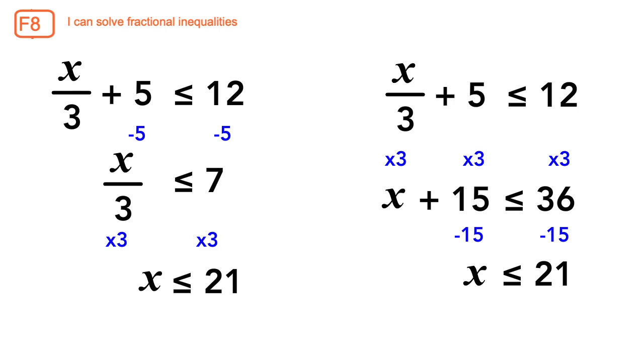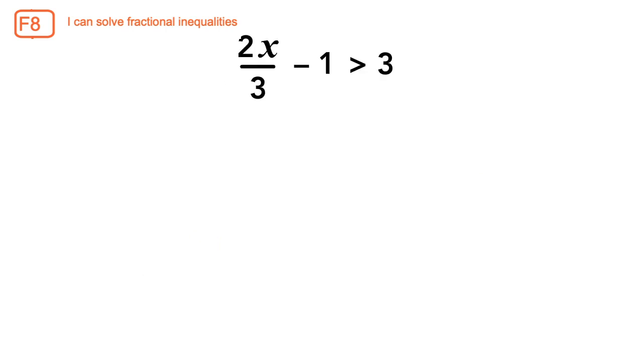To avoid confusion, the first process is how we will proceed going forward. Let's try with this question. We will add 1 to both sides, which gives us 2x over 3 which is greater than 4.